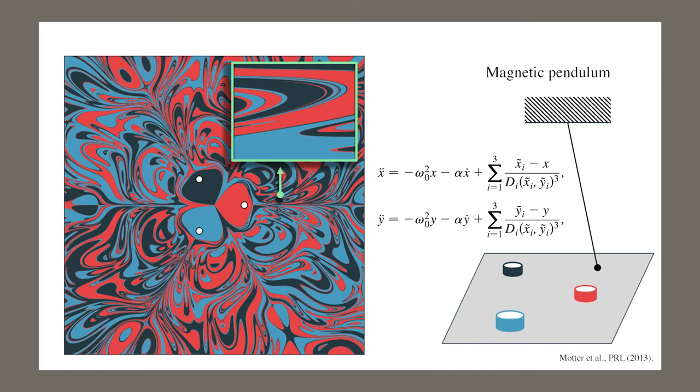We can look at the basins of attraction for the three magnets. If we started close to the blue magnet, for example, it would eventually settle down onto the blue magnet. But further away from the magnets, the three basins all became intermingled with each other and start to resemble an abstract watercolor painting.